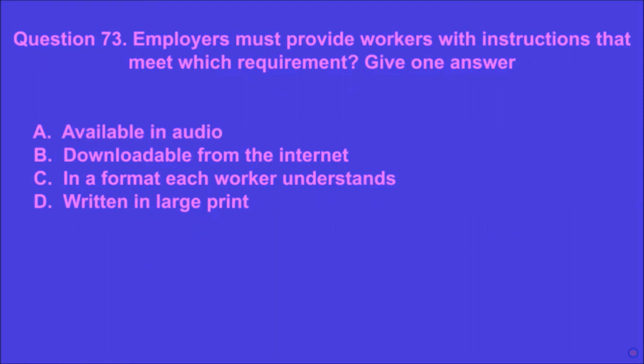Question 73: Employers must provide workers with instructions that meet which requirement? Give one answer. A: available in audio, B: downloadable from the internet, C: in a format each worker understands, D: written in large print. C is the correct answer.